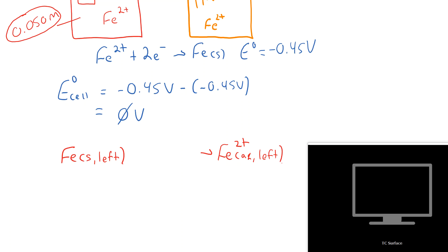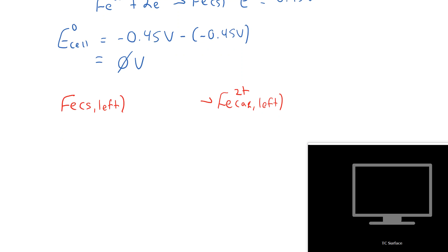Well, in order for this guy to oxidize, that means somebody's got to reduce. And what we're going to find is that the orange side is going to reduce to allow the other side to oxidize. And so we're going to find that on the left, we're going to take solid iron and convert it to iron 2+. On the right, we're going to take iron 2+ and convert it to solid iron. So on the left, iron 2+ concentration will increase over time. On the right, iron 2+ concentration will decrease over time.